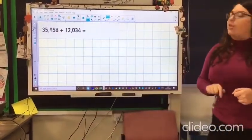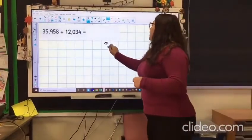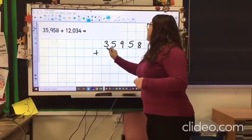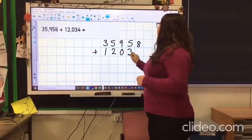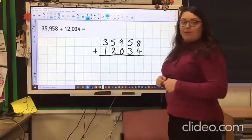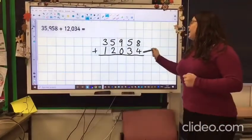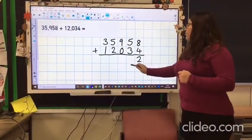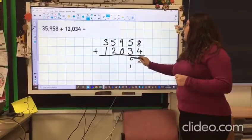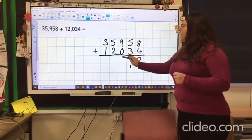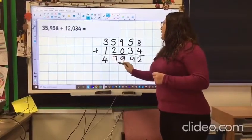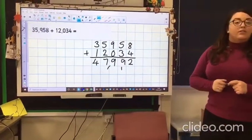Okay, this one you definitely need to use your column method for: 35,958 add 12,034. Not a very straight line, but hopefully yours is neater. 8 add 4 is 12, so 2, carry over your 1. 5 add 3 is 8, but don't forget to add the 1 at the bottom, which is 9. 9 add 0 is 9, 5 add 2 is 7, 3 add 1 is 4. So your answer would be 47,992.